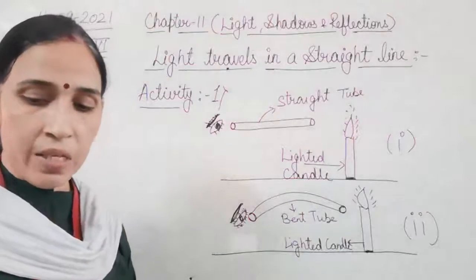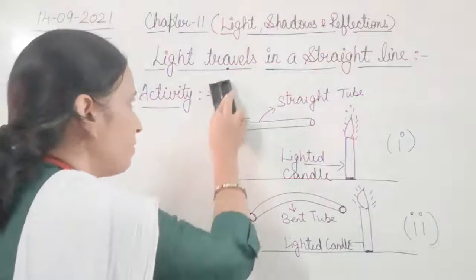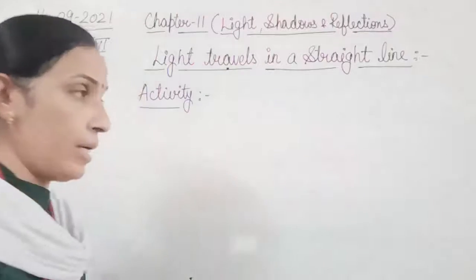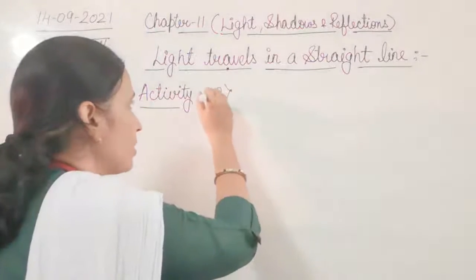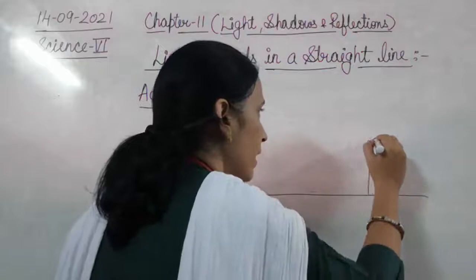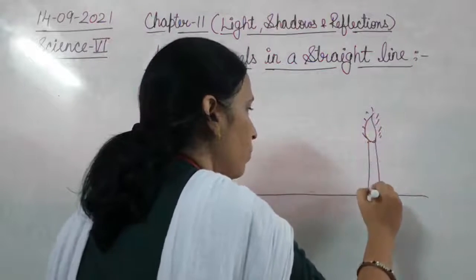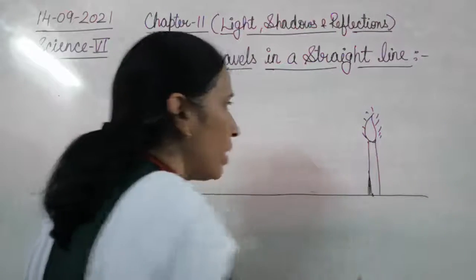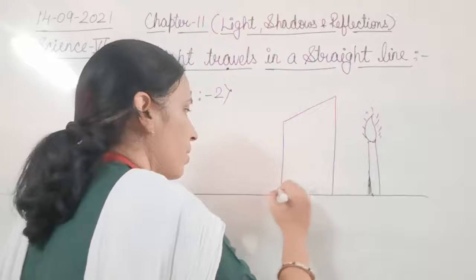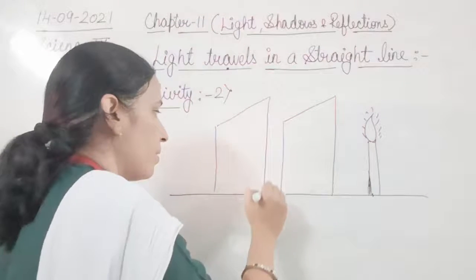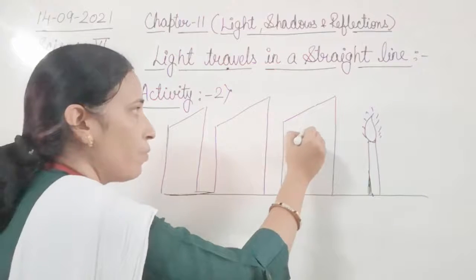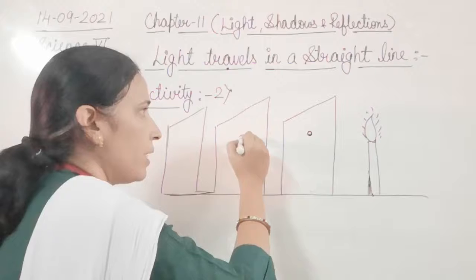Now, one more activity we have. That second activity we will see, which is also related to light traveling in a straight line. In this activity, on a table we are going to take a lighted candle, and we will place three cardboards having one hole at equal level.